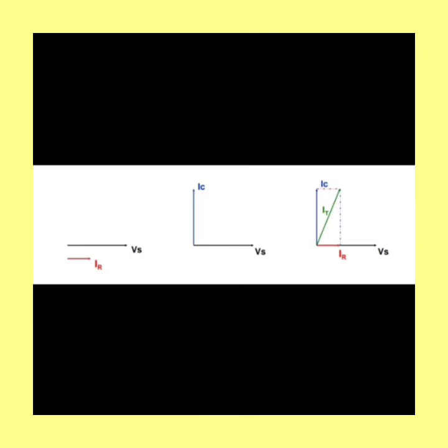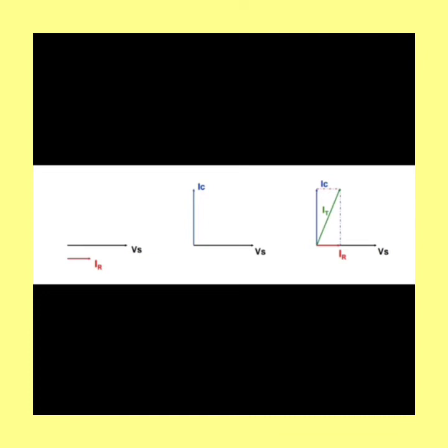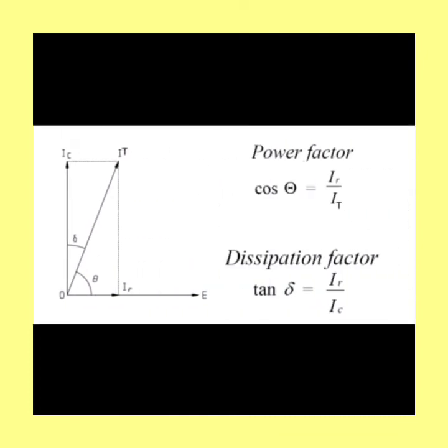The total current is IT, that is a vector sum of your IC and IR. Now, again look at the picture represented in a different manner. If you look at here, the angle between capacitive current and the total current is delta.